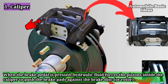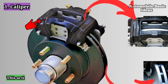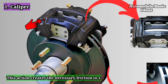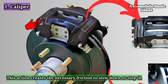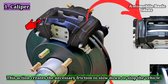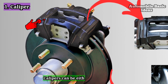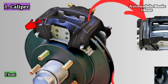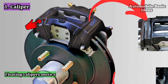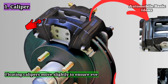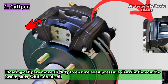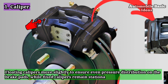This action creates the necessary friction to slow down or stop the vehicle. Calipers can be either floating or fixed. Floating calipers move slightly to ensure even pressure distribution on the brake pads, while fixed calipers remain stationary and use multiple pistons to apply pressure.